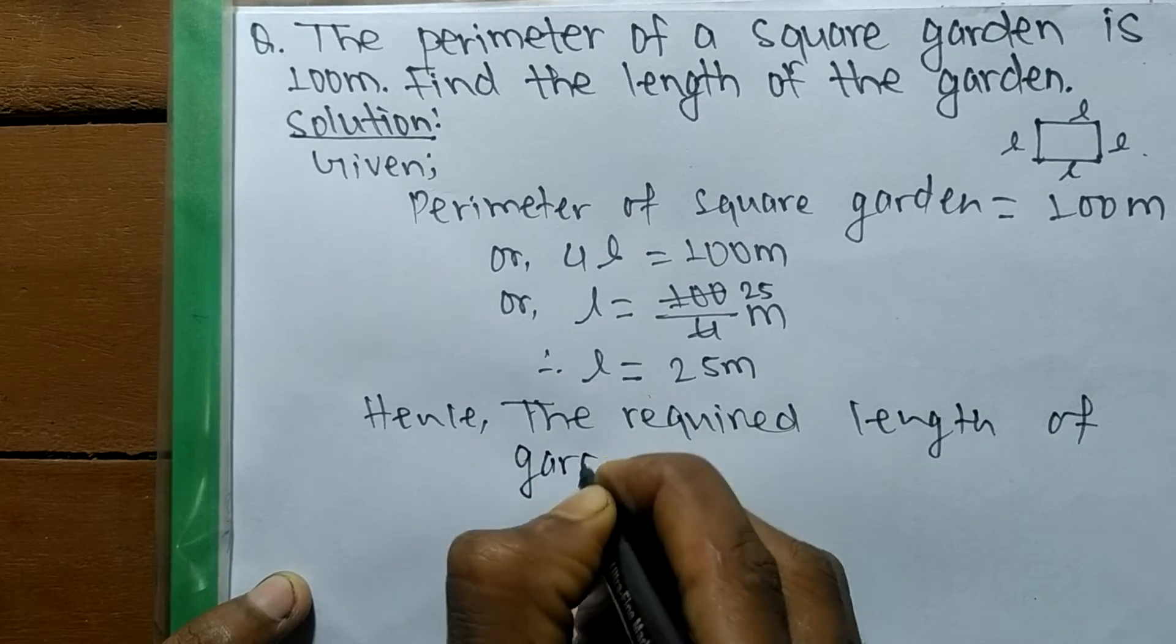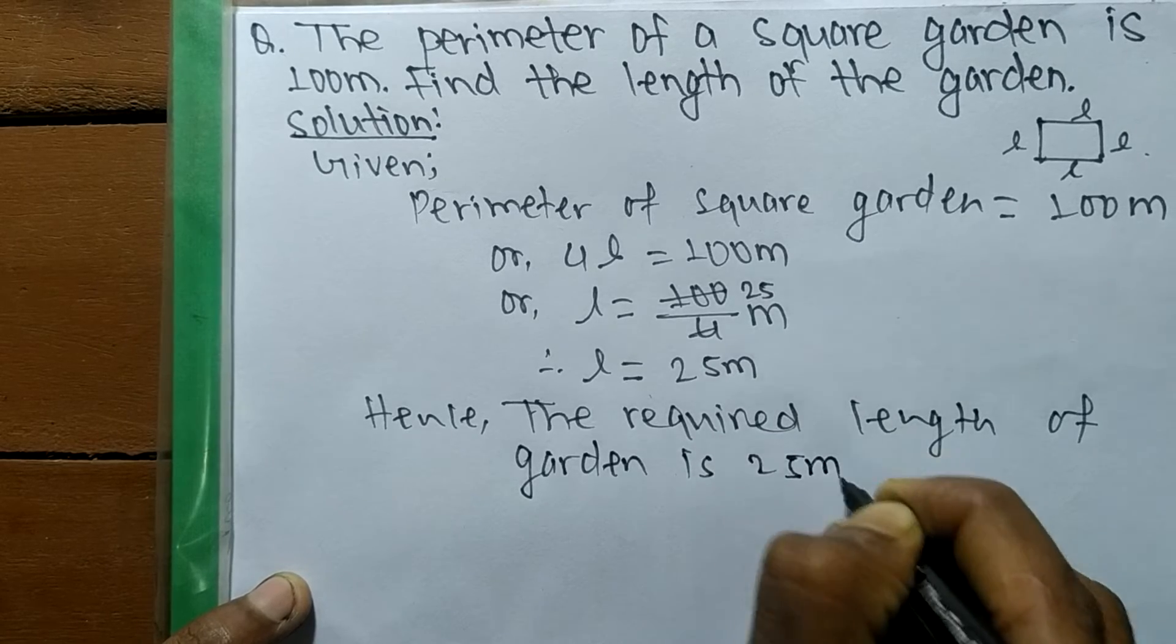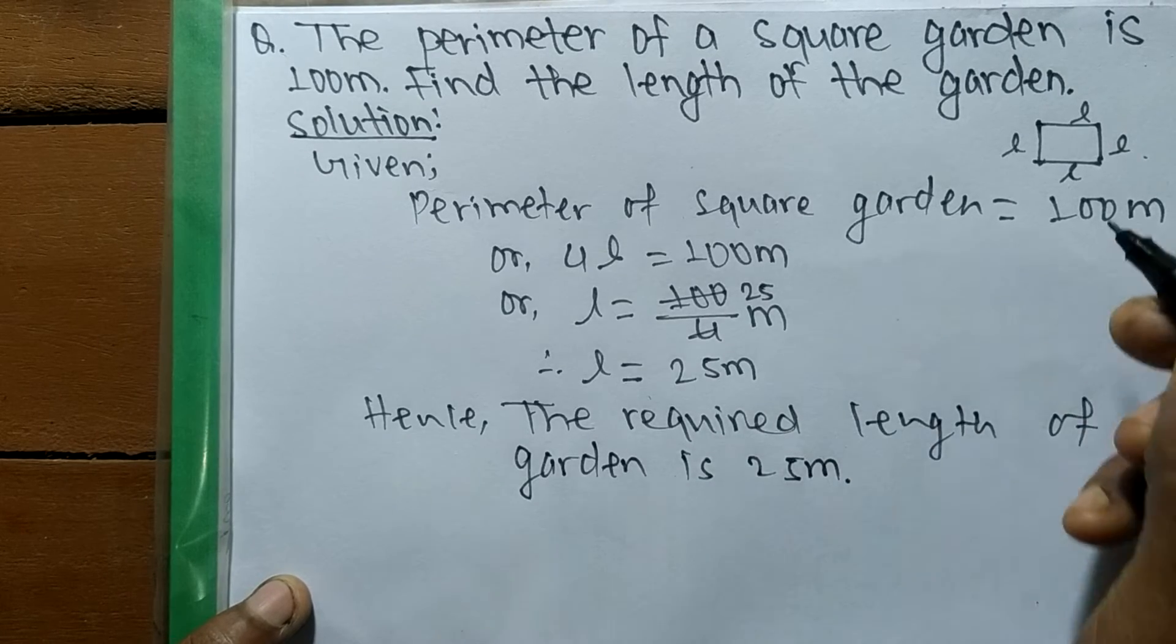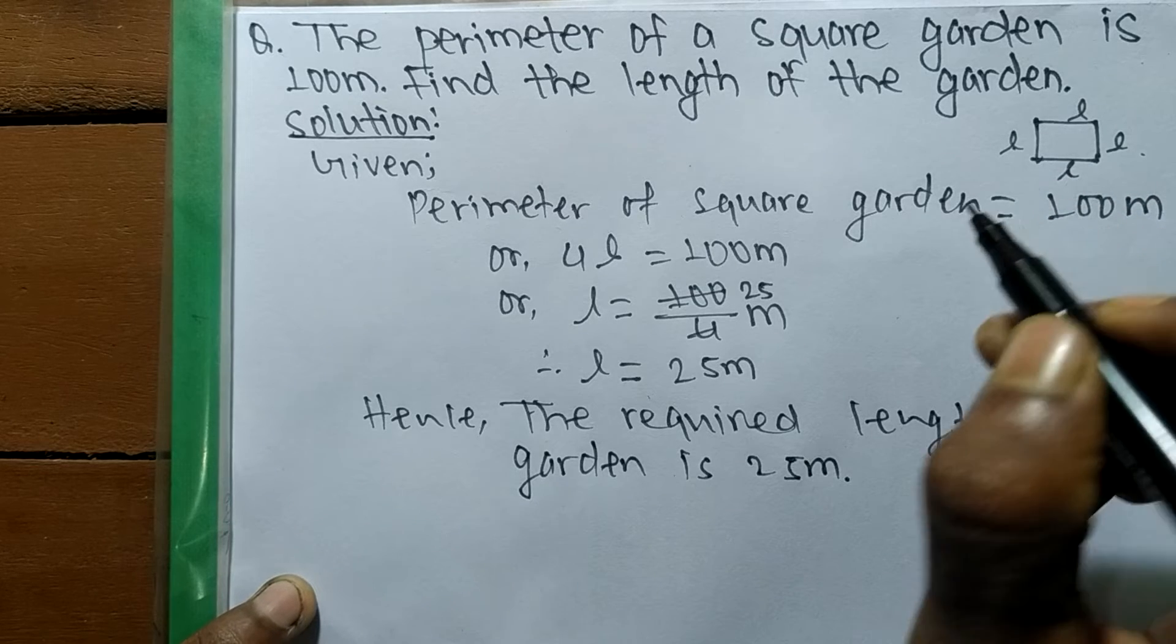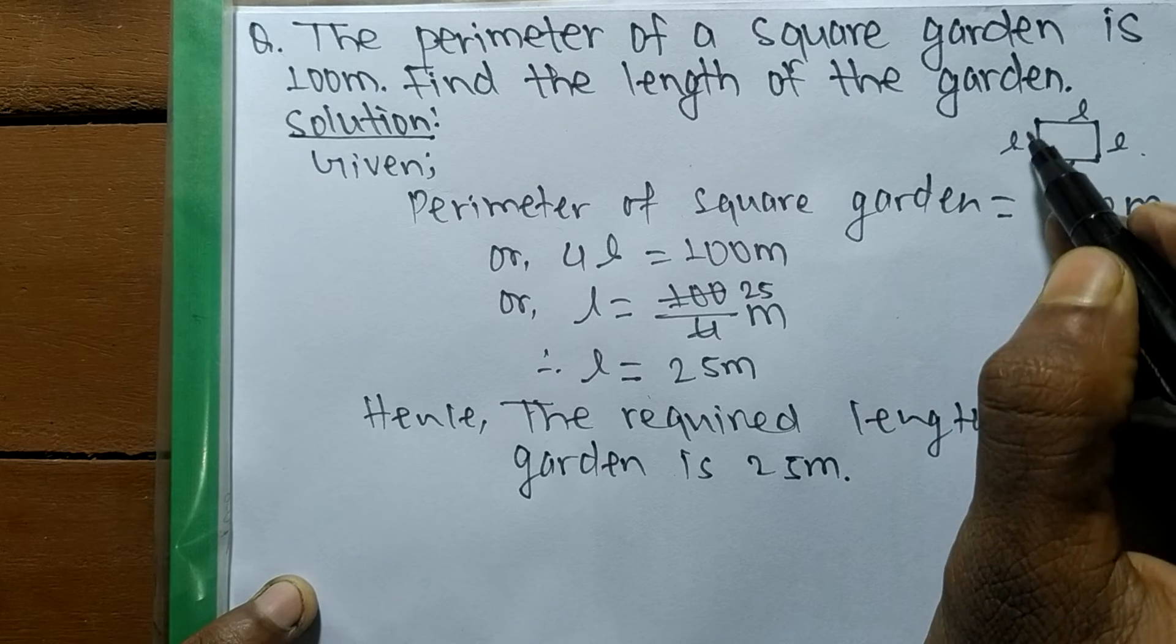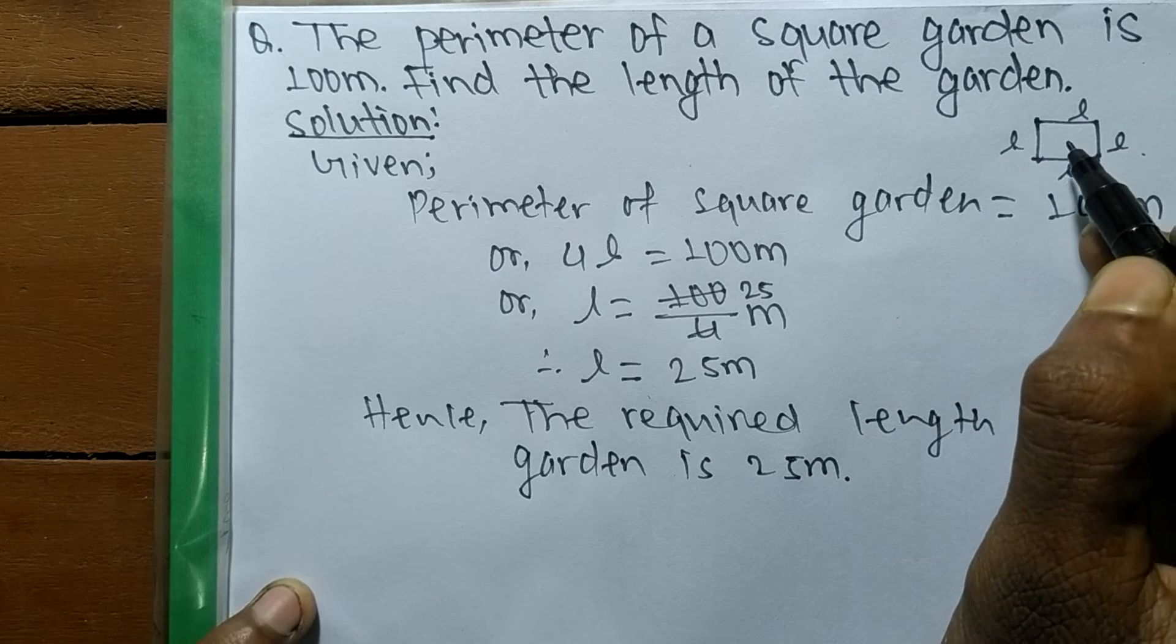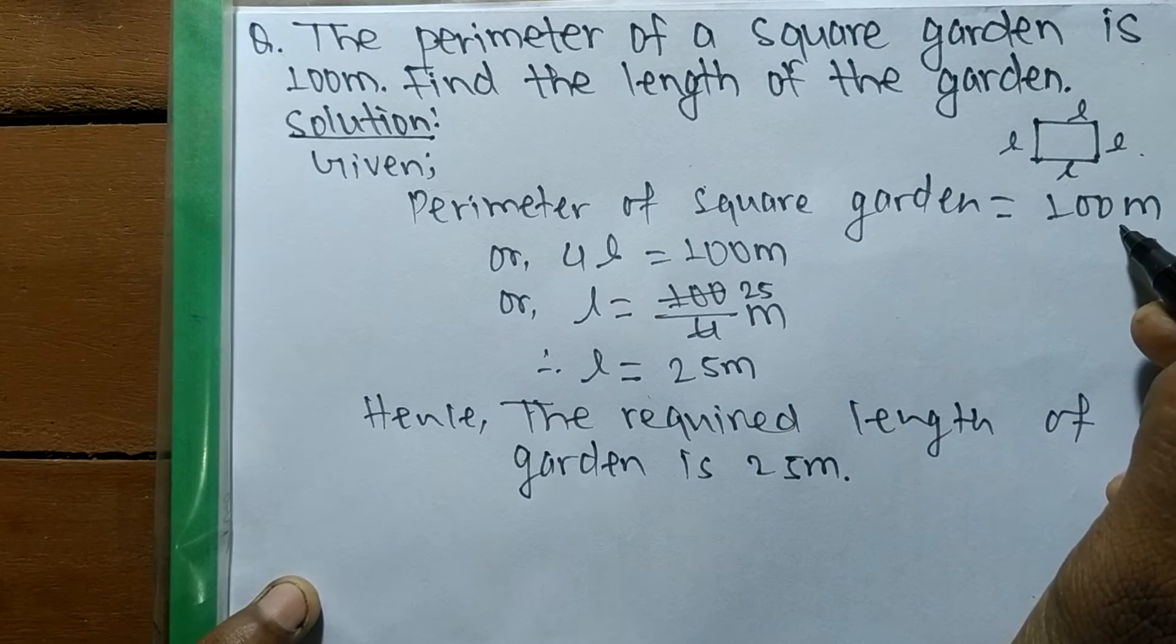So hence the required length of garden is 25 meters. When there is a square garden, it means all sides are equal, and perimeter always means the sum of all sides. So when we sum each side, then we get 4L which is equal to 100, the perimeter of garden.